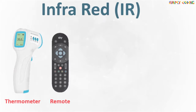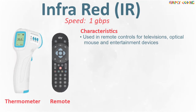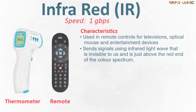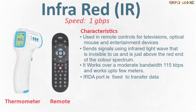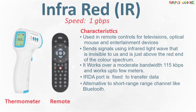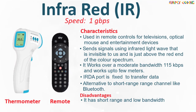Next is infrared wireless transmission media. It has a transmission speed of up to 1 Gbps. It is used in remote controls for televisions, optical mice, and most other entertainment devices. It sends signals using infrared light waves that are invisible to us, just above the red end of the color spectrum. It works over a moderate bandwidth of 115 Kbps and works up to 10 meters. An IrDA port is normally fixed in mice, printers, and digital devices to enable them to transfer data using infrared light waves. It is also an alternative to short range communication devices like Bluetooth. Its disadvantages are short range, low bandwidth, and it requires line-of-sight transmission.